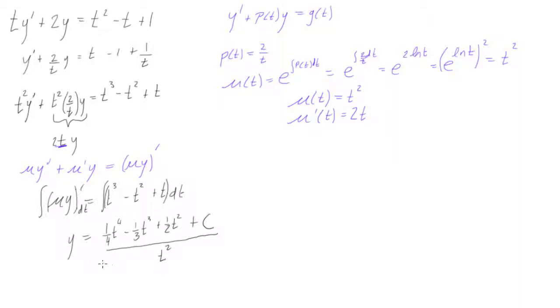So now what we can do is, we'll just simplify this a little bit, and we'll say that y is equal to 1/4 times t squared minus 1/3, t cubed over t squared is just t,